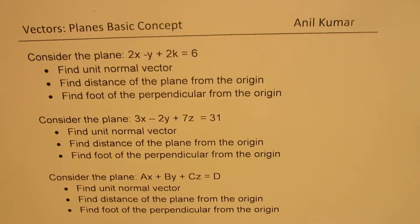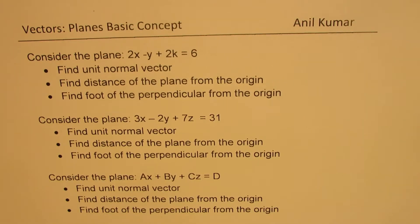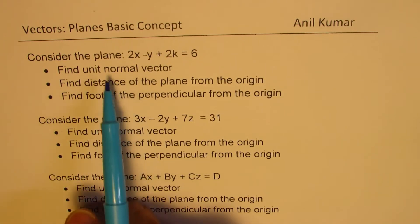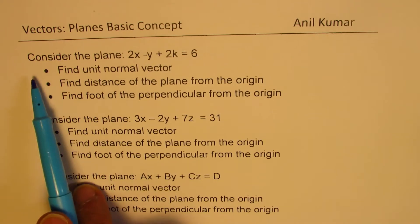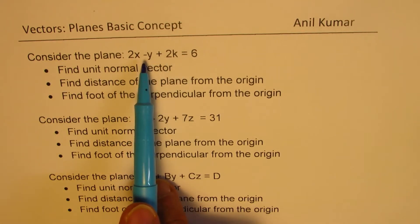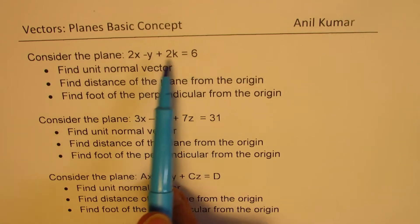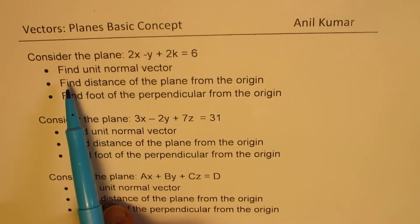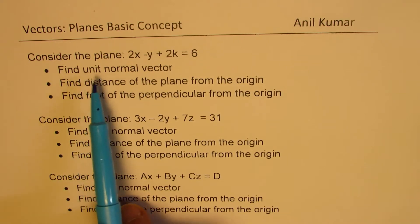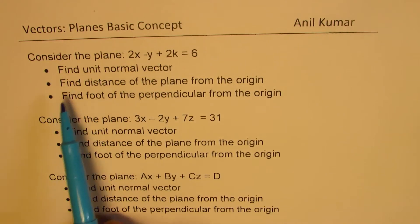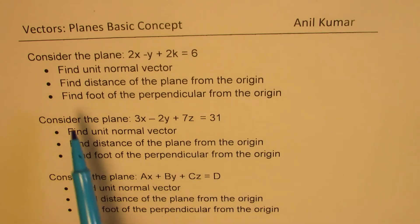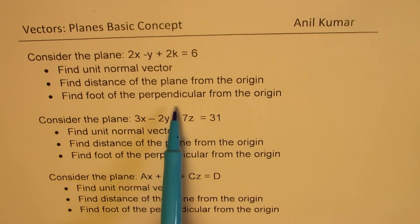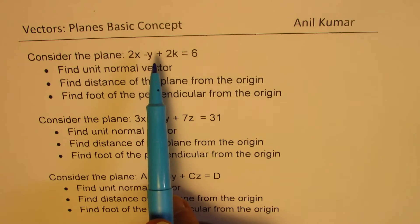I'm Anil Kumar. Welcome to my series on planes. We'll discuss a few very basic concepts, and I'm going to focus on this particular question. We'll consider the equation of a plane in Cartesian form — the scalar equation of a plane — and from the equation we'll figure out the unit normal vector, the distance of the plane from the origin, and the foot of the perpendicular from the origin to the plane.